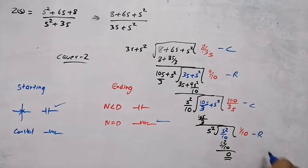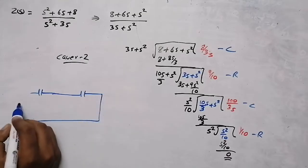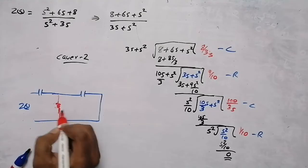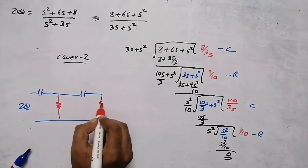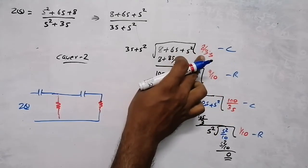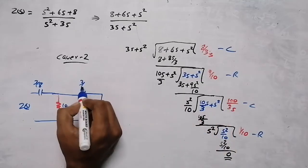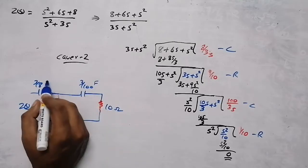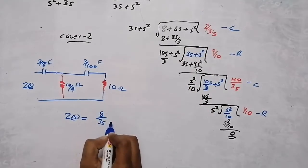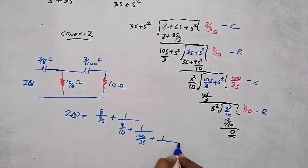So the circuit starts with a capacitor and ends with a resistor, alternating: capacitor, resistor, capacitor, resistor. In the shunt positions we have resistors. For getting the values in Cauer 2, take the reciprocal of whatever value appears. The first capacitor is 8/3s, so reciprocal gives 3/8 farad. The first shunt resistor is 9/10, reciprocal gives 10/9 ohms. The next capacitor is 100/3s, reciprocal gives 3/100 farad. The last resistor is 1/10, reciprocal gives 10 ohms. The impedance in continuous fraction form is: 8/(3s) + 1/(9/10 + 1/(100/(3s) + 1/(1/10))).